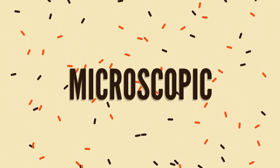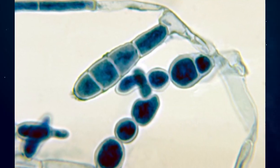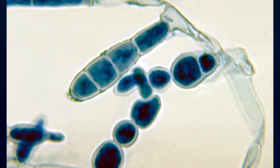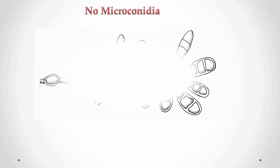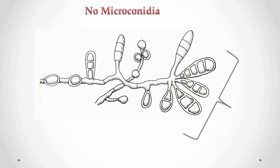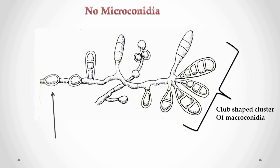Microscopic characteristics: hyphae are septate, smooth, and hyaline with no microconidia. Macroconidia are best seen in young cultures and are smooth, both thin and thicker walled, club-shaped with rounded ends. They contain two to six cells and are found singly or in characteristic clusters.